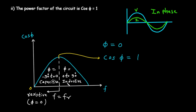The graph shown here illustrates this. The vertical axis is the power factor, cos phi, and the horizontal axis is the frequency, f. You can see a curve that starts at zero, rises to a peak, and then falls back down. The peak occurs at the resonant frequency, labeled f sub r. At this exact frequency, the power factor reaches its maximum possible value of 1. On either side of this frequency, the circuit is either more capacitive or more inductive, and the power factor is less than 1.